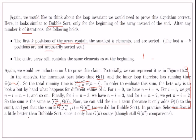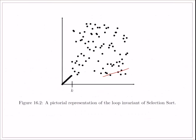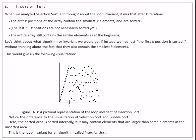Selection sort is a little better than bubble sort because it only has O(n) swaps. Bubble sort had O(n²) swaps and O(n²) comparisons, but here we have only n swaps, though the comparisons are still O(n²). Then we move on to insertion sort.